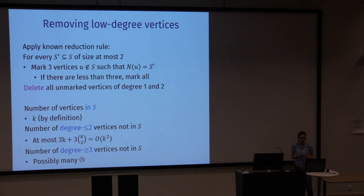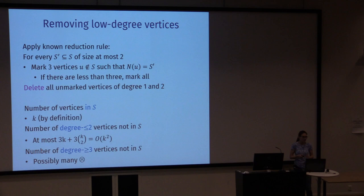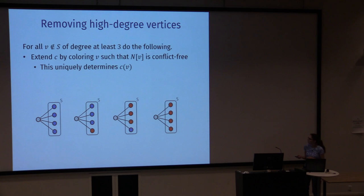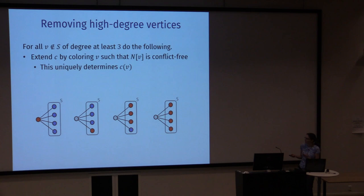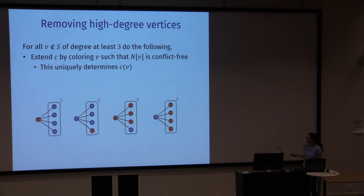Handling degree-3-or-higher vertices outside the vertex cover turns out to be easy once the vertex cover is coloured, because their colouring is immediately implied. We can only be in one of four situations: all-blue neighbourhood means the vertex must be red; exactly one red neighbour means it must be blue; exactly one blue neighbour means it must be red; all-red neighbourhood means it must be blue. So we just extend the colouring using this rule — we know how to colour all high-degree vertices outside the vertex cover.